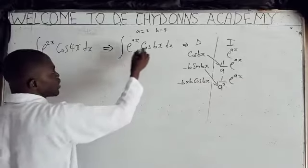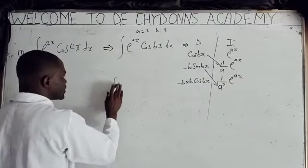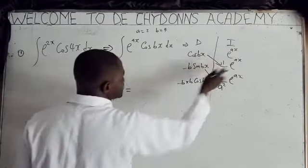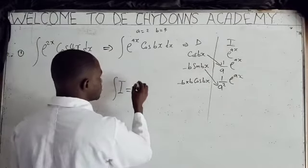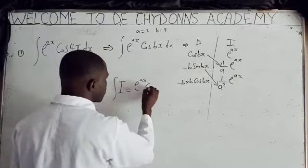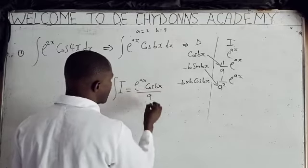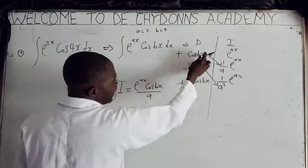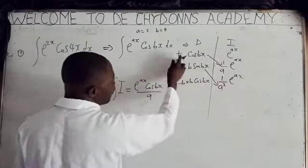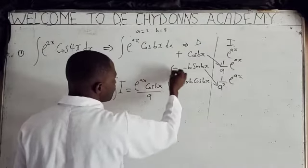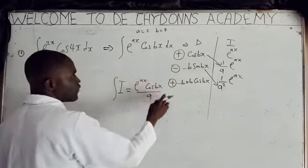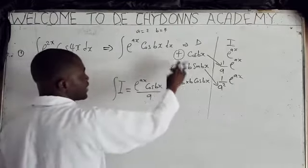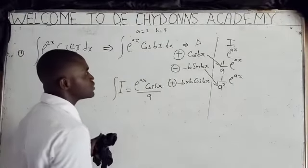We call the whole integral I. On the sign side, we assign plus, minus, plus — these signs are constant. If you continue the pattern it goes minus, plus, minus, plus and so on. Since we have three rows, our signs are plus, minus, plus.